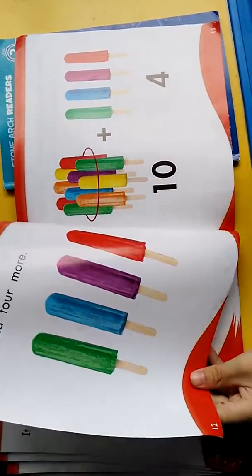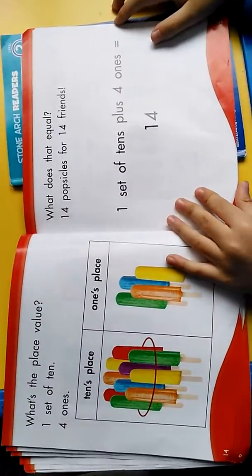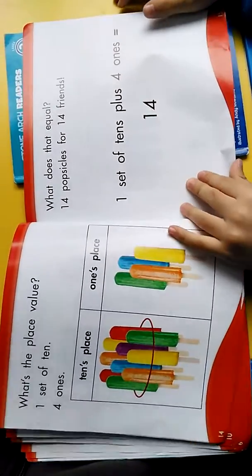Now add four more. What's the place value? One set of ten, four ones.